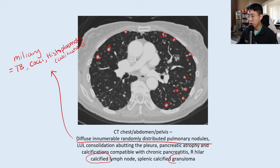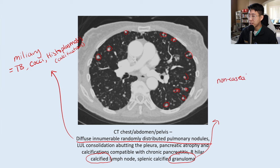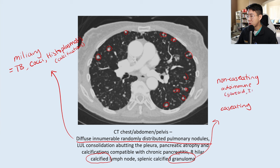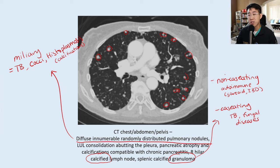The granuloma seen in the spleen can be caused by any of these fungal infections. When thinking about granulomas, differentiate non-caseating granulomas — most commonly seen in autoimmune diseases like sarcoidosis and inflammatory bowel disease — from caseating granulomas, which suggest tuberculosis or fungal diseases like histoplasmosis and coccidioidomycosis.